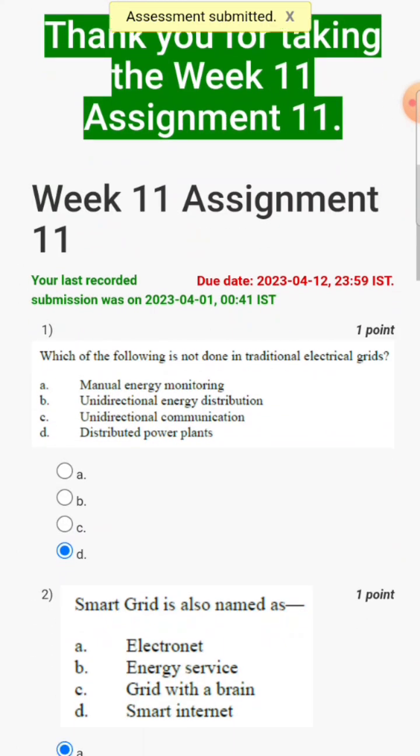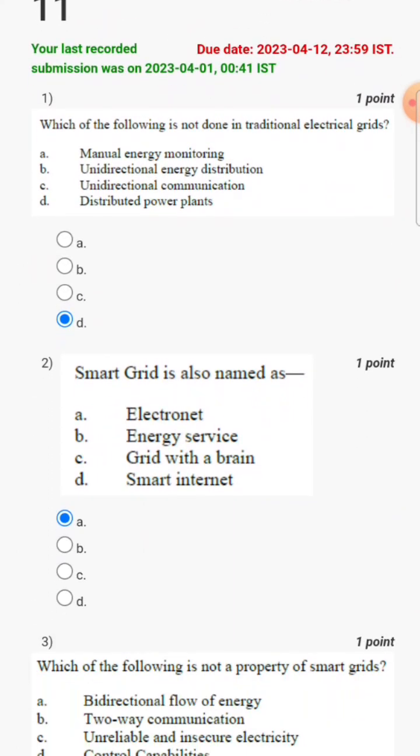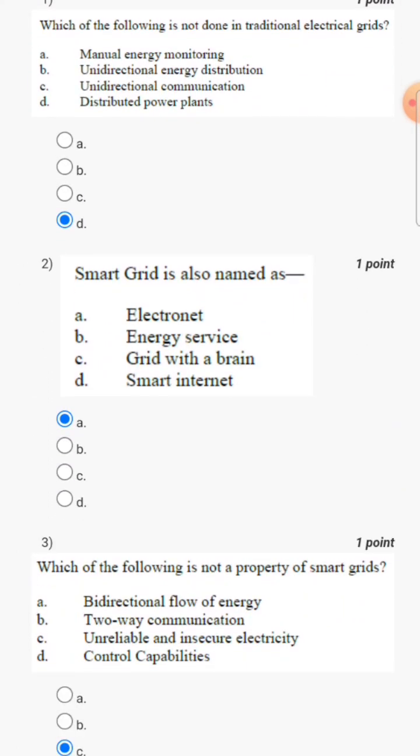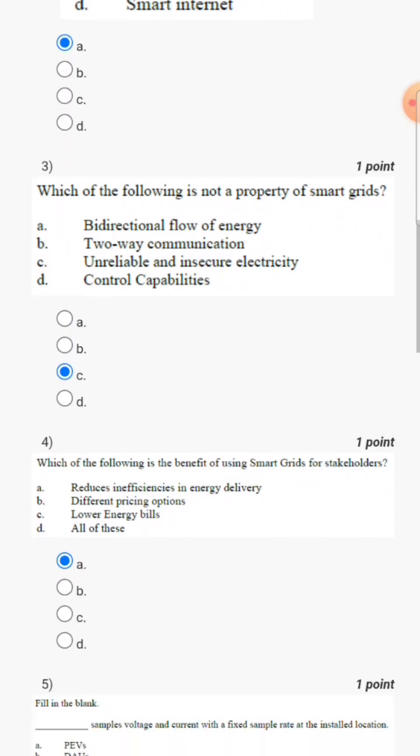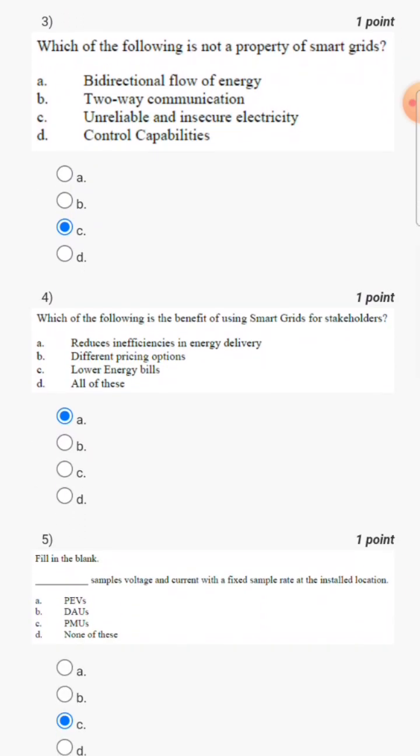So you can see we have submitted the assignment 11. Question number one, its answer is D. Then we have question 2, its answer is B. Question 3, its answer is C. Question 4, its answer is A.